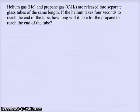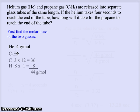Let's look at a sample. Helium gas and propane gas are released into separate glass tubes of the same length. If the helium takes four seconds to reach the end of the tube, how long will it take for the propane to reach the end of that same length tube? First, we find the molar masses of those two gases. Helium, from the periodic table, is four grams per mole, and propane we calculate as three times twelve and eight times one to get 44 grams per mole.